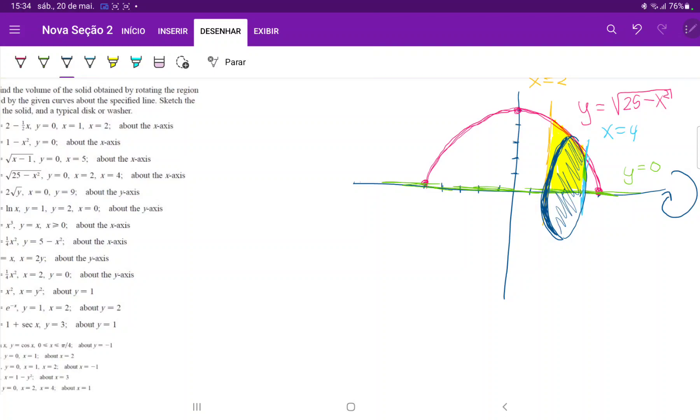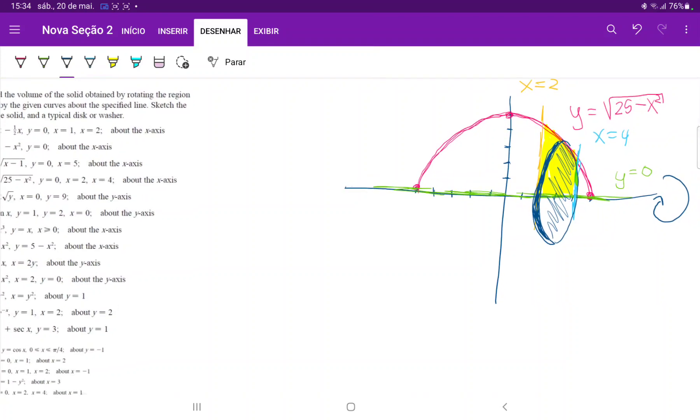So this over here will be the area of the disk. So all we're doing is we're summing up these areas between the line x equals 2 and x equals 4. Now, remember that the area of a disk is pi r squared.